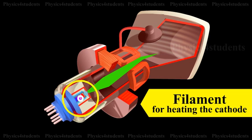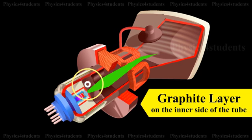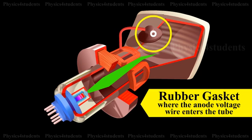It is the filament for heating the cathode that emits electrons. There is a graphite layer on the inner side of the tube. There is a rubber gasket where the anode voltage wire enters the tube.